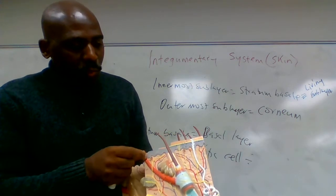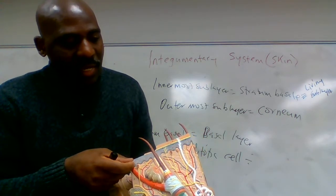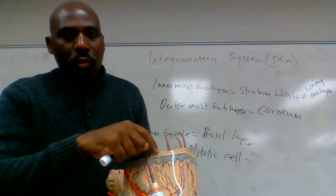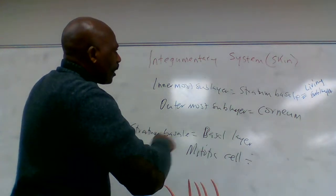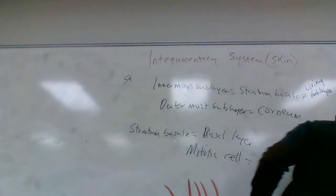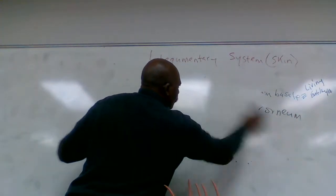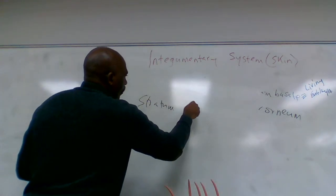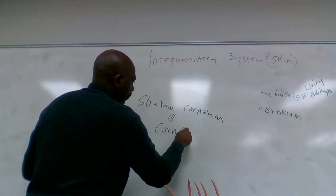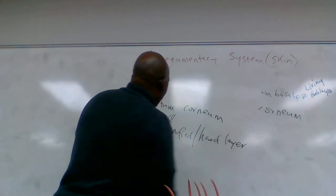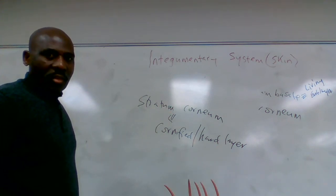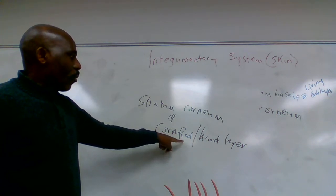The epidermis is mostly dead. The stratum corneum — which means the cornified or hard layer — is the outermost sub-layer. The cells in the stratum corneum are all dead cells, and because this layer is hard or cornified, it makes it protective.